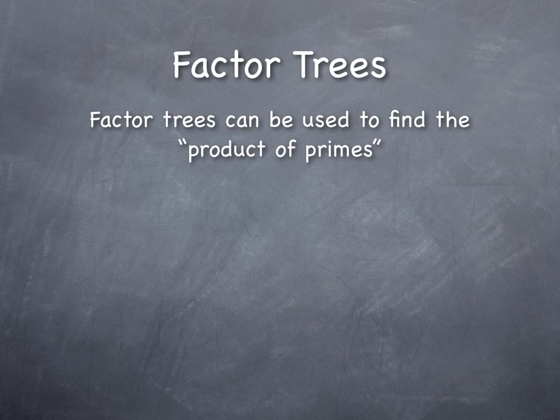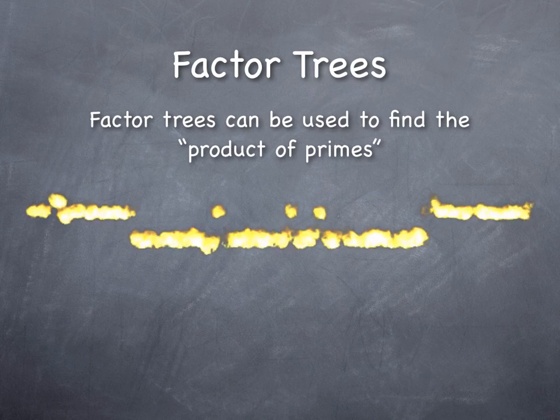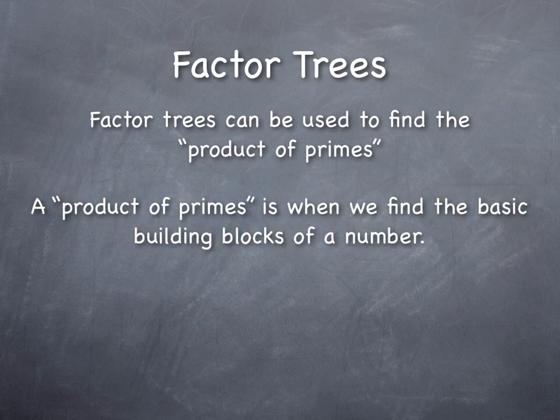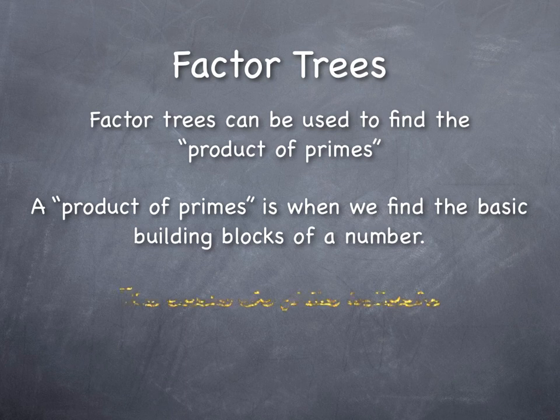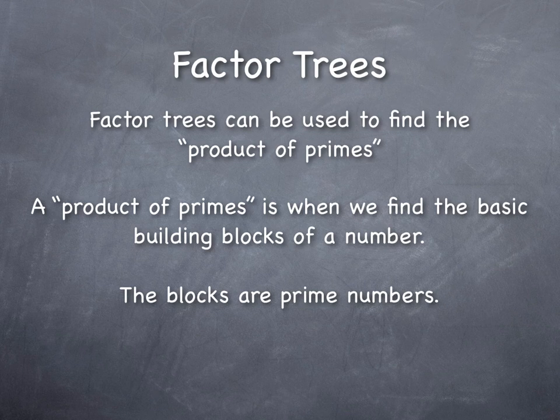But we can combine those together to try to find the prime factors of a number. Another way to write this is the product of primes. Now, the product of primes is when we find the basic building blocks of a number. All numbers that are not prime can be built from multiplying other prime numbers together. So we're going to do that, and the blocks then are those prime numbers.